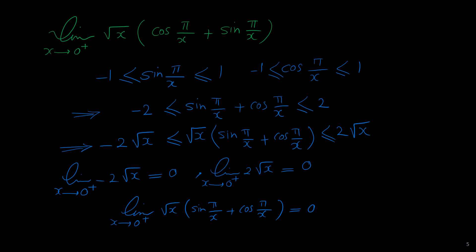The reason x approaches 0 only from the right in this question is that we have a square root of x, and x inside a square root cannot be negative. So this limit only exists when x approaches 0 from the right. I hope you enjoyed this video. If you like it, please subscribe, and see you in the next videos.